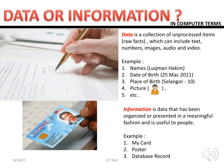Data is a collection of unprocessed items — raw facts such as images, pictures, text, and numbers. For example, a name like Luqman Hakib, a date of birth like 25th March 2011, or an address — these are what we call data.